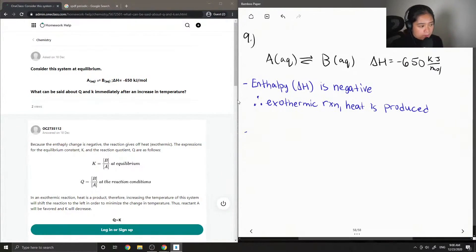Okay, so we'll also define what Q and K represent. K is the concentration of B over the concentration of A at equilibrium.